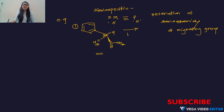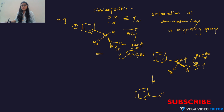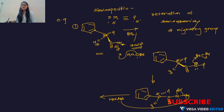Now we can see the stereospecific mechanism. The starting material reacts with Br₂ in the presence of NaOH. NaOBr takes the proton from nitrogen, giving a negative charge on nitrogen: CH₃–C(H)–CO–N⁻–H. The negatively charged nitrogen then attacks the bromine to give CH₃–C(H)–CO–N(Br)–H with lone pair on nitrogen.